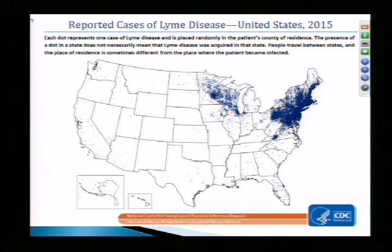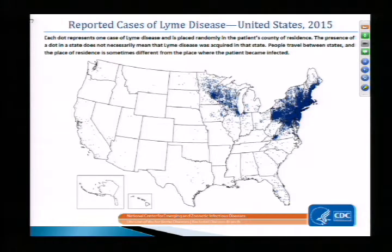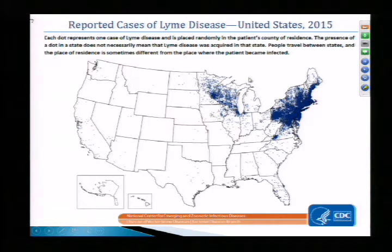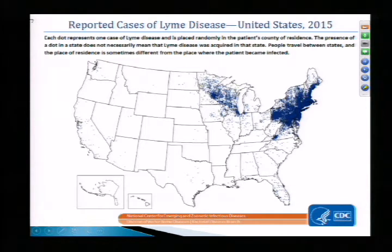This map from the CDC shows reported cases of Lyme disease in 2015. The blue dots represent cases, based on where the person with the diagnosis lives, not necessarily where they acquired the infection. The hot spots are up in the Northeast, and you are on the edge of another hot spot in the upper Midwest, with a few other spots in the Pacific Northwest and along the West Coast.